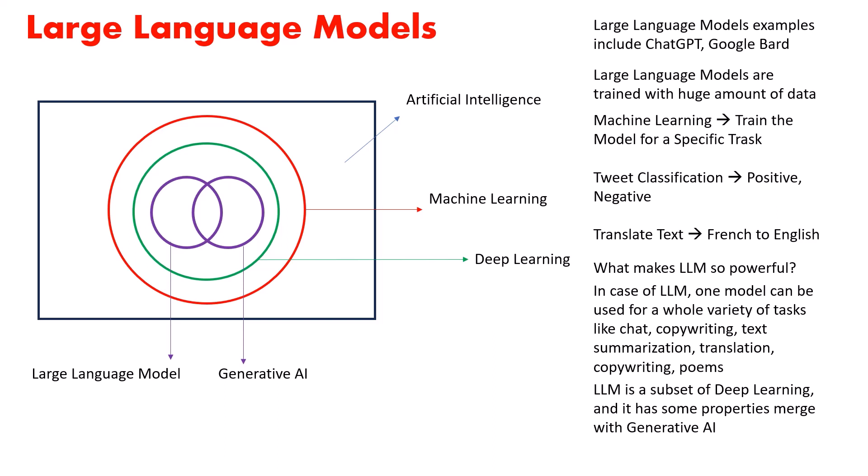A large language model is a subset of deep learning. You can see in the diagram that the green area represents deep learning, and generative AI sits within it. So the large language model is a subset of deep learning.